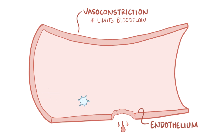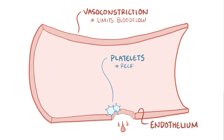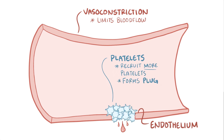After that, some platelets adhere to the damaged vessel wall and become activated and then recruit additional platelets to form a plug. The formation of the platelet plug is called primary hemostasis.